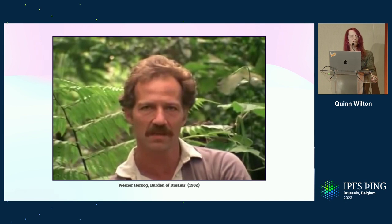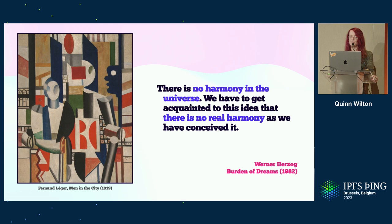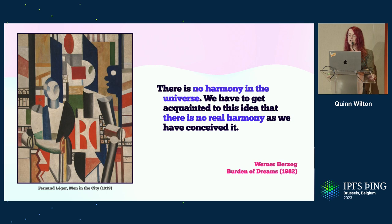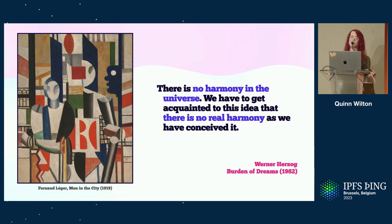This is really important: there is no harmony in the universe — we have to get acquainted to this idea that there is no real harmony as we have conceived it. This is a scary thought, and I can understand why it sometimes feels like the entire history of computing has been a history of trying to paint over this fact. But I think it is a fact, and our tendency to force the world into strict categorizations and hierarchies limits not only the resiliency of our systems but also what we're able to accomplish with them.